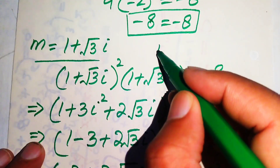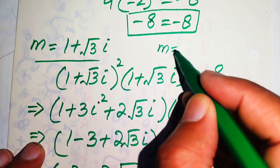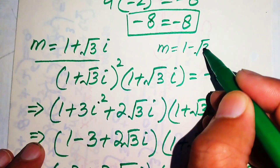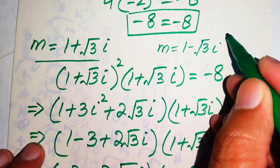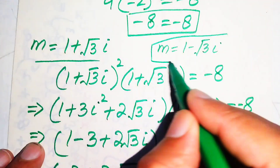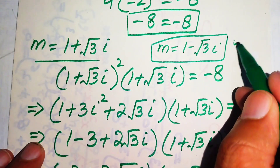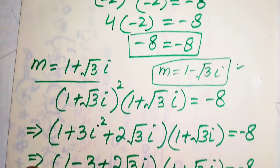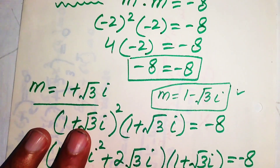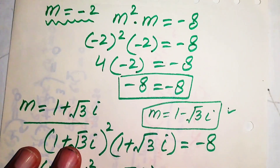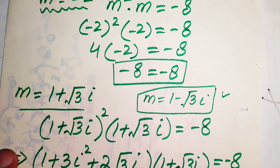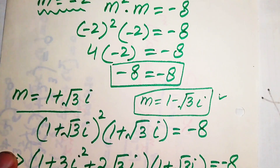Similarly, the third solution is also verified and satisfies the given equation. This means all three solutions satisfy the original equation m squared times m equals minus 8. This is the final answer. Thank you so much for watching this video.